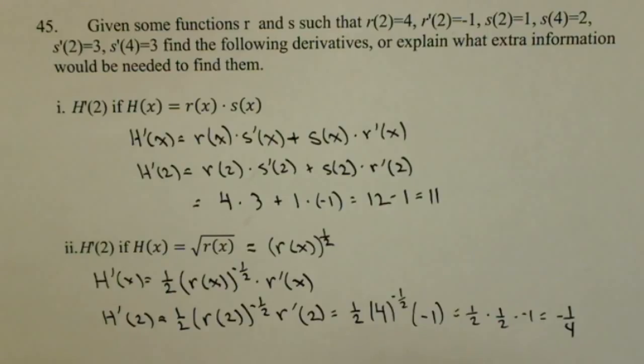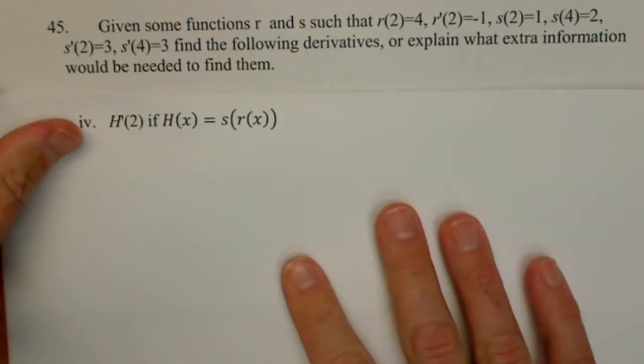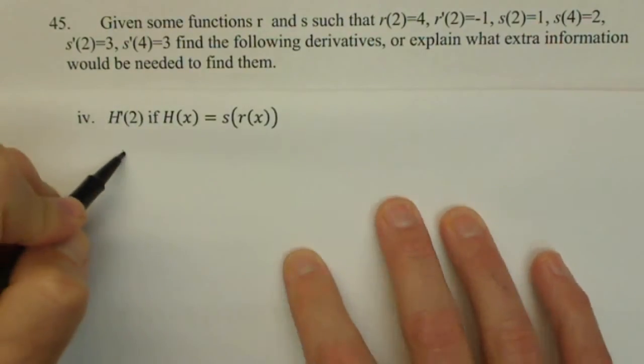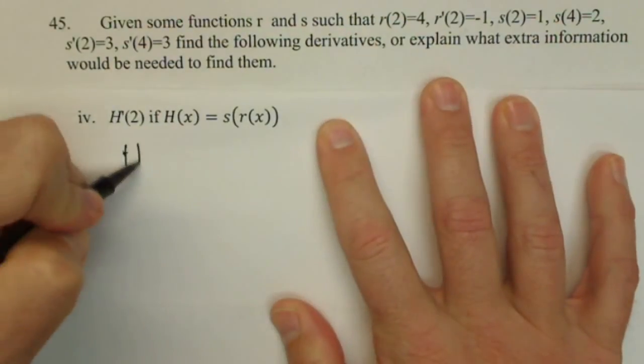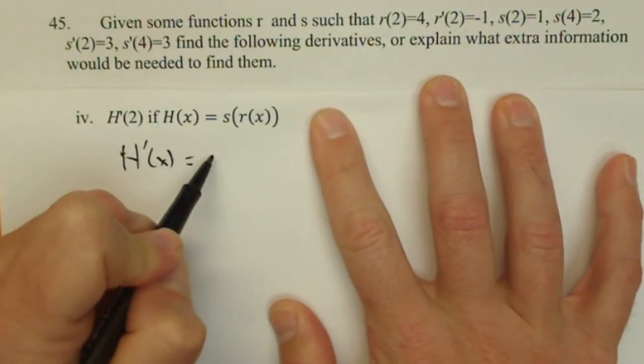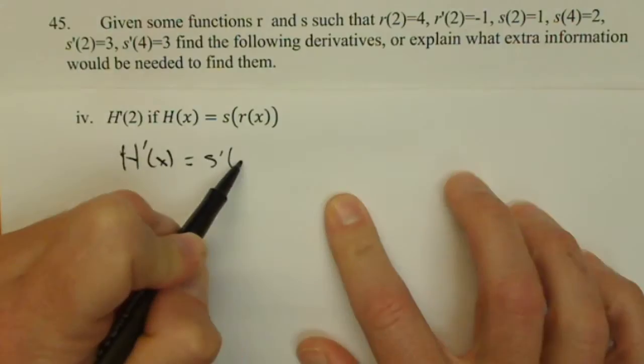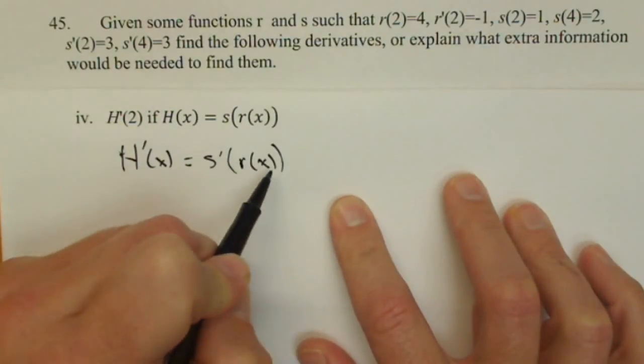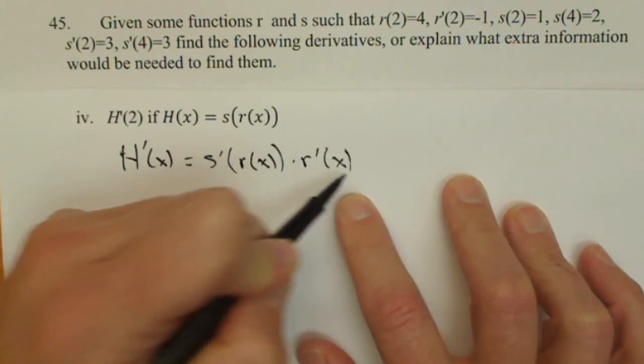Let's do one more. It's going to be a composition the other way. So, now it's s of r of x. So, H prime of x equals s prime, leave the inside alone, derivative of outside, leave inside alone, times the derivative of the inside, which is r prime of x.